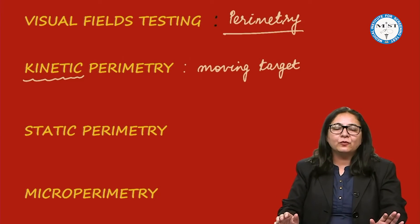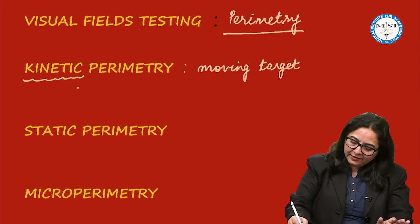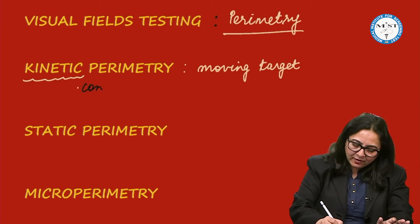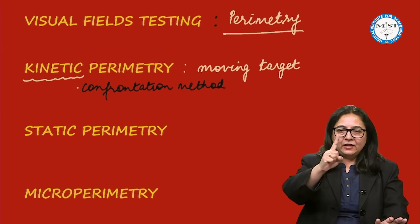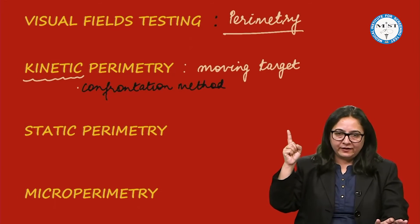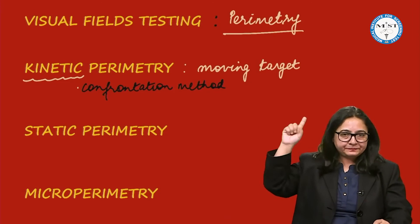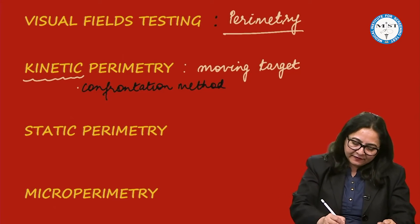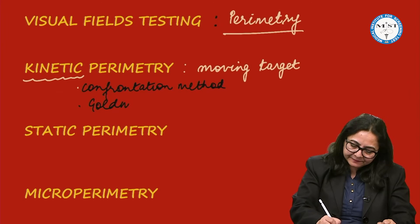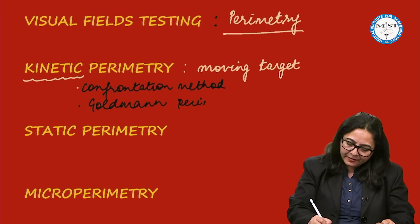Examples of kinetic perimetry include the confrontation perimetry or confrontation method, which is the simplest. In the confrontation method, you ask the patient to fix at a central point and bring your finger from the outer field to the inner field, asking the patient when they can see your finger. The finger moves from outer to inner field as a fixed target. Another example of kinetic perimetry is the Goldmann kinetic perimeter.